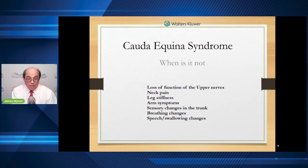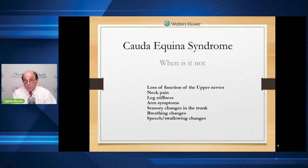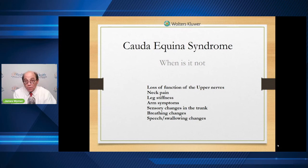When is it NOT cauda equina? Because a lot of people have back pain and some may have bowel or bladder dysfunction — is it always cauda equina? Remember, you can get spinal cord lesions midway in the spinal cord or up in the neck that can produce some of these symptoms. Neck pain is not part of cauda equina — I see back pain with it, but if it's neck pain, you have to think about other things. Leg stiffness is a sign of upper motor nerve dysfunction. Remember, I separated upper and lower motor nerves. If you see brisk reflexes, stiffness, or spasticity, these are signs of upper motor nerve dysfunction.